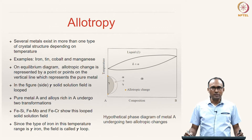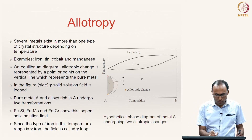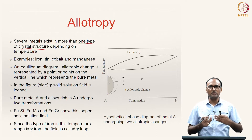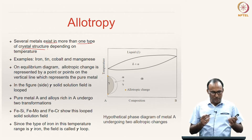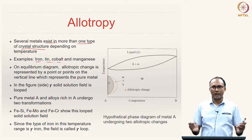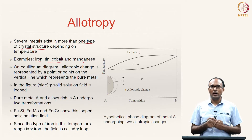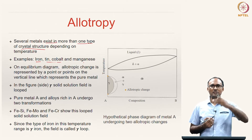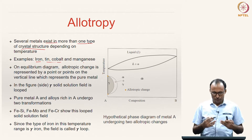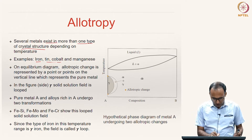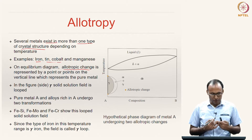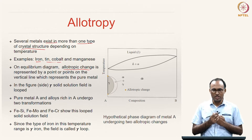Several metals exist in more than one type of crystal structure depending on temperature — at a lower temperature they exist in one crystal structure, and at a higher temperature it actually changes. Examples of such materials are iron, tin, cobalt, and manganese. Iron is known to have BCC at low temperature; if you increase the temperature, the crystal structure changes from BCC to FCC. On a phase diagram, the allotropic change is represented by a point on the vertical line.